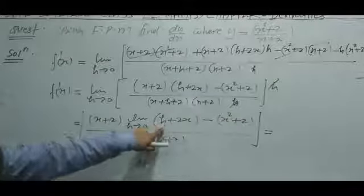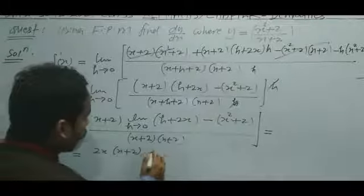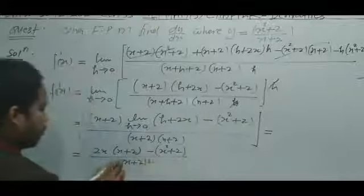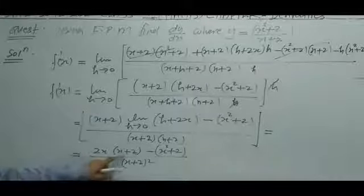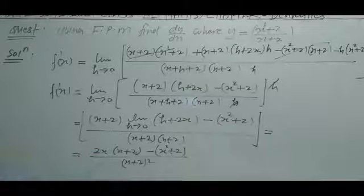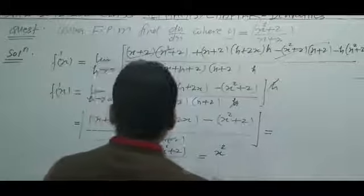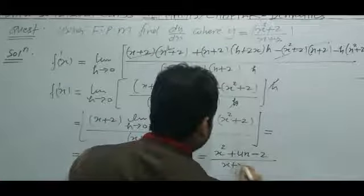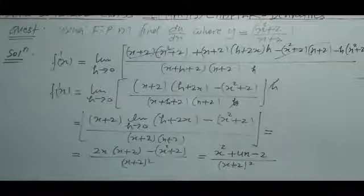Writing this out: 2x times (x plus 2) minus (x² plus 2), whole upon (x plus 2) squared. Expanding gives 2x² plus 4x minus x² minus 2, which simplifies to x² plus 4x minus 2. So the final answer is: x squared plus 4x minus 2, whole upon (x plus 2) whole squared. This is the answer and the problem is now completed.